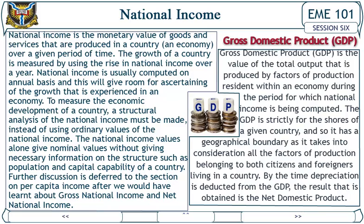Gross Domestic Product (GDP): Gross domestic product is the value of the total output that is produced by factors of production resident within an economy during the period for which national income is being computed. The GDP is strictly for the shores of a given country and so it has a geographical boundary, as it takes into consideration all the factors of production belonging to both citizens and foreigners living in a country. By the time depreciation is deducted from the GDP, the result obtained is a net domestic product.